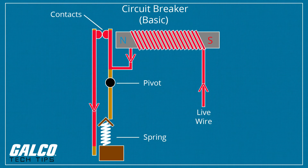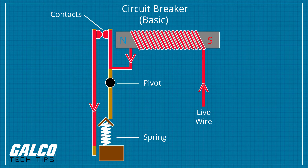A basic circuit breaker consists of a simple switch connected to either a bimetallic strip or an electromagnet. The hot wire in the circuit connects to the two ends of the switch. When the switch is flipped to the on position, electricity can flow from the bottom terminal through the electromagnet, up to the moving contact, across to the stationary contact, and out to the upper terminal.